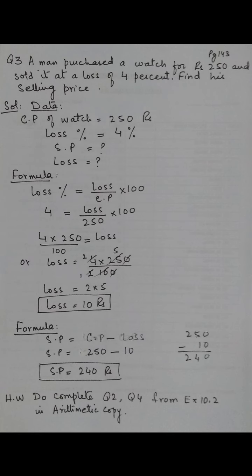Third question: A man purchased a watch for rupees 250 and sold it at a loss of 4 percent. Find his selling price. The cost price of the watch is 250 rupees and the loss percent is 4%. We will find out the SP and the loss.